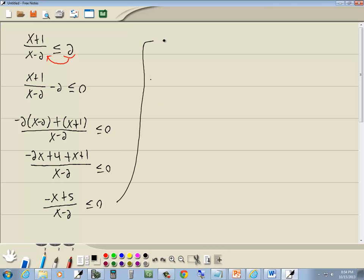So I'll set the negative x plus 5 equal to 0. And I'll set the x minus 2 equal to 0. Now here I'll take negative x to the right side. And we get x is equal to 5. And here I'll take negative 2 over and we get x is equal to 2.